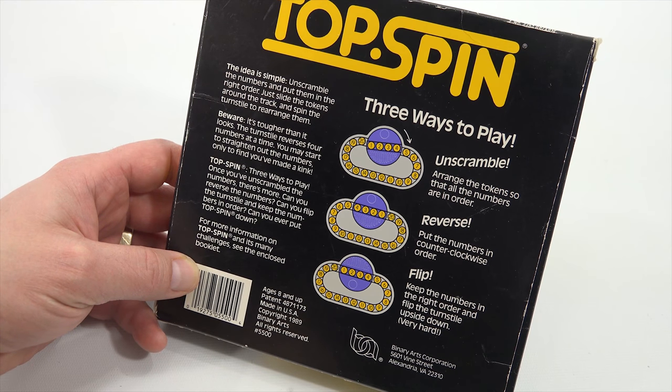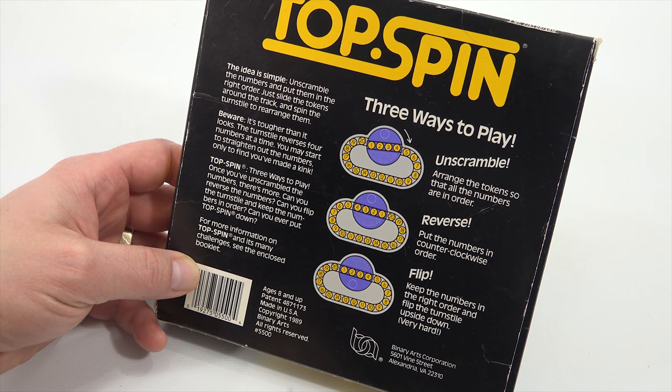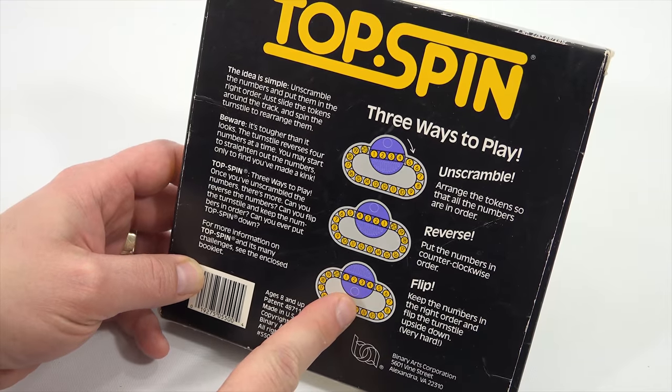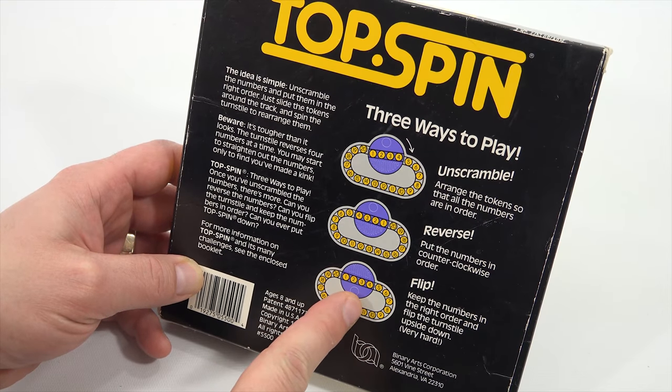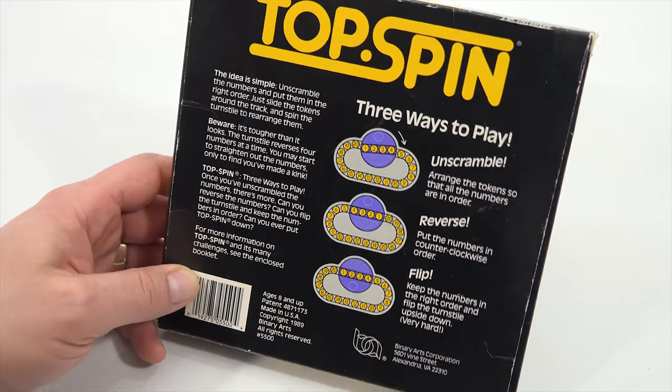Keep the numbers in the right order and flip the turnstile upside down. Okay, so it looks like the circle that's for your finger is at the bottom instead of the top. Okay, that's good to know.